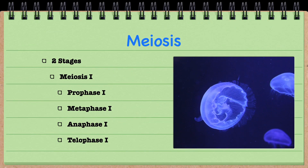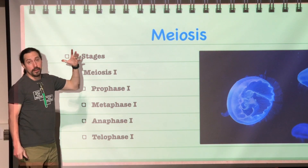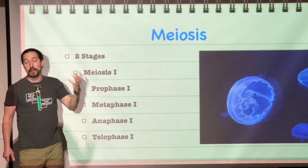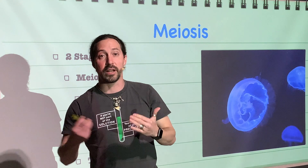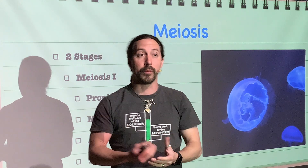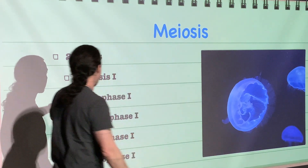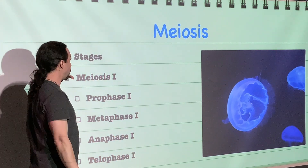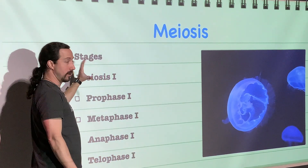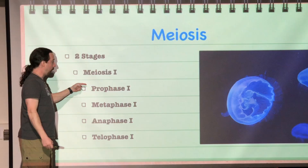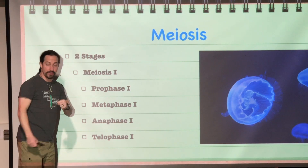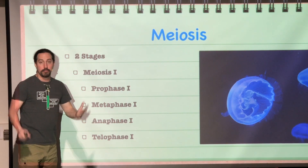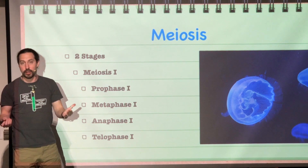Meiosis has two stages. The first set of stages might sound very familiar if you remember the cell cycle and remember mitosis. Meiosis has meiosis I: prophase I, metaphase I, anaphase I, and telophase I. Very straightforward.